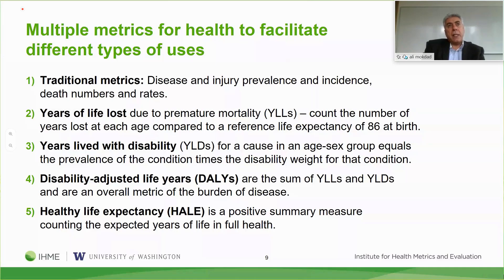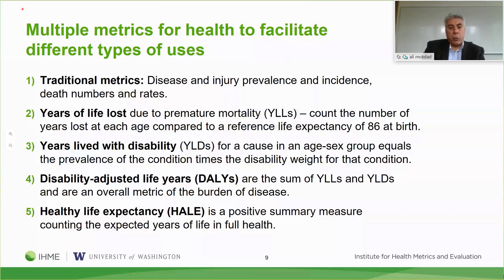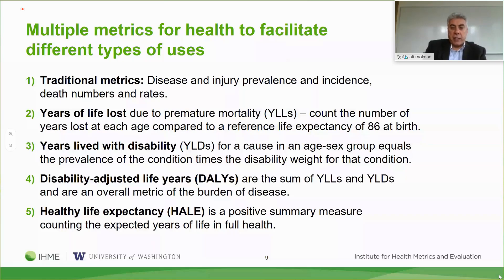Years Lived with Disability: if somebody in DC at age 60 gets diabetes, we assign a disability weight depending on severity and measure years lived with disability to capture what's ailing us. Mental health conditions like anxiety and depression rarely kill but are associated with high disability, and we're able to account for that. Disability-Adjusted Life Years (DALYs) combines YLLs and YLDs and is a good indicator of population health because it tells you what's killing people, what's ailing them, and how early deaths occur. We can also subtract disability from life expectancy to provide healthy life expectancy.